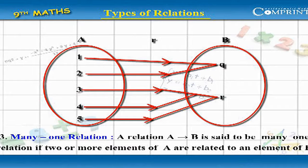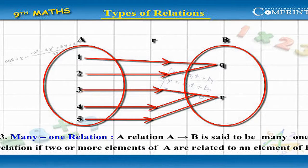Many-1 Relation: A relation from A to B is said to be a Many-1 relation if two or more elements of A are related to an element of B.